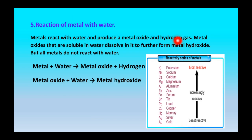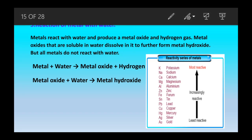The next property is the reaction of metals with water. Metals react with water to produce metal oxide and hydrogen gas. Metal oxides that are soluble in water dissolve to form metal hydroxide. However, not all metals react with water — some react with cold water, some with hot water, and some do not react with water at all.